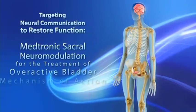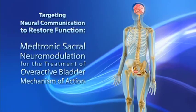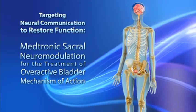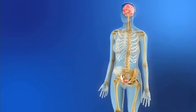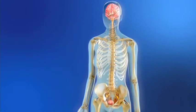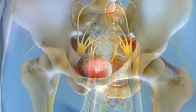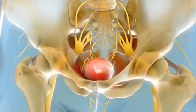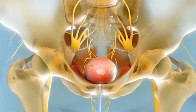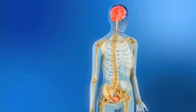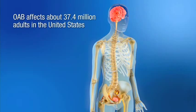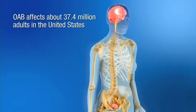Targeting Neural Communication to Restore Function: Medtronic Sacral Neuromodulation for the Treatment of Overactive Bladder Mechanism of Action. Overactive Bladder, or OAB, is a urologic condition defined by urinary urgency with or without incontinence, urinary frequency, and or nocturia. OAB affects about 37.4 million adults in the United States.